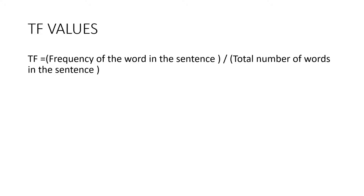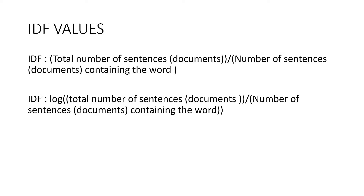IDF refers to Inverse Document Frequency and can be calculated as follows: IDF equals total number of sentences (i.e., documents) divided by number of sentences containing the word. It is important to mention that the IDF value for a word remains the same throughout all the documents and depends upon the total number of documents. On the other hand, TF values of a word differ from document to document. For the word 'play', since we have three documents and the word appears in all three, the IDF value is 3 divided by 3, which equals 1.